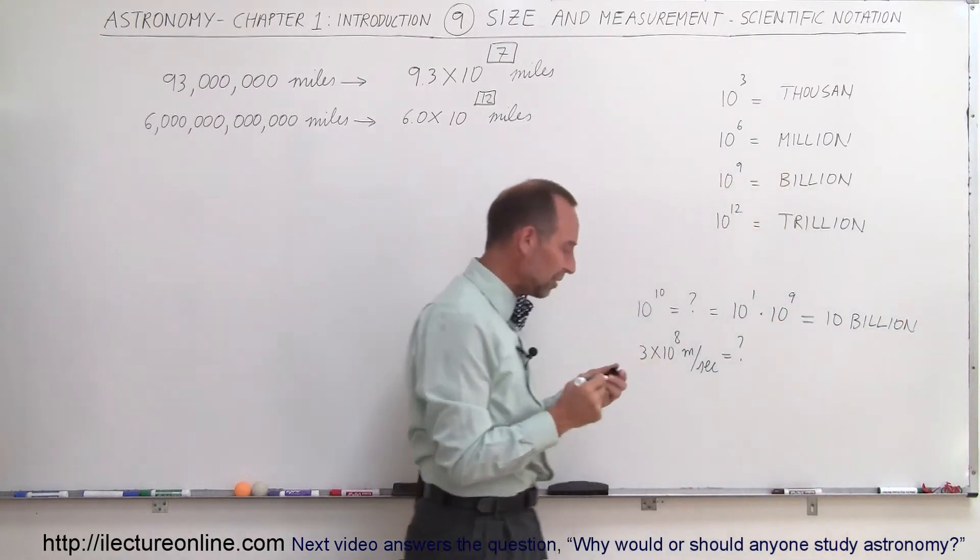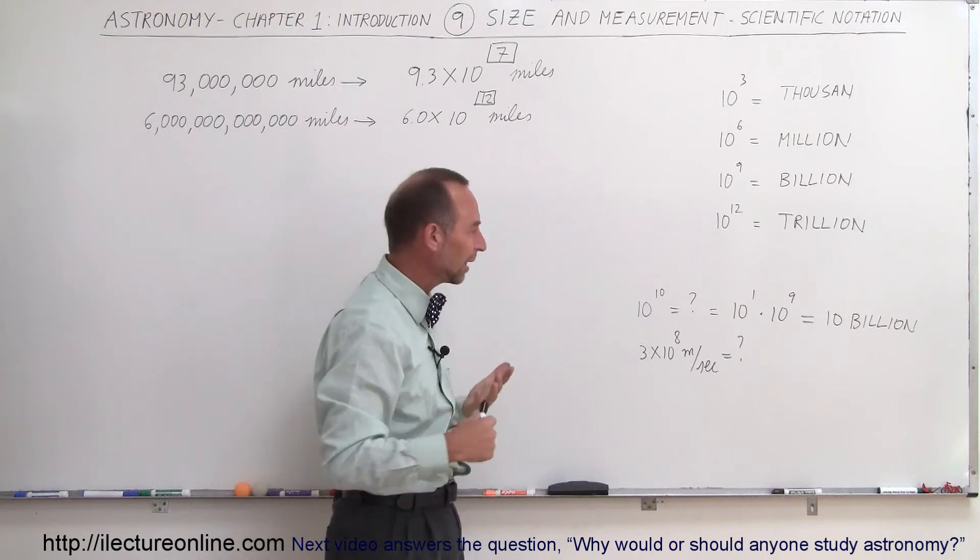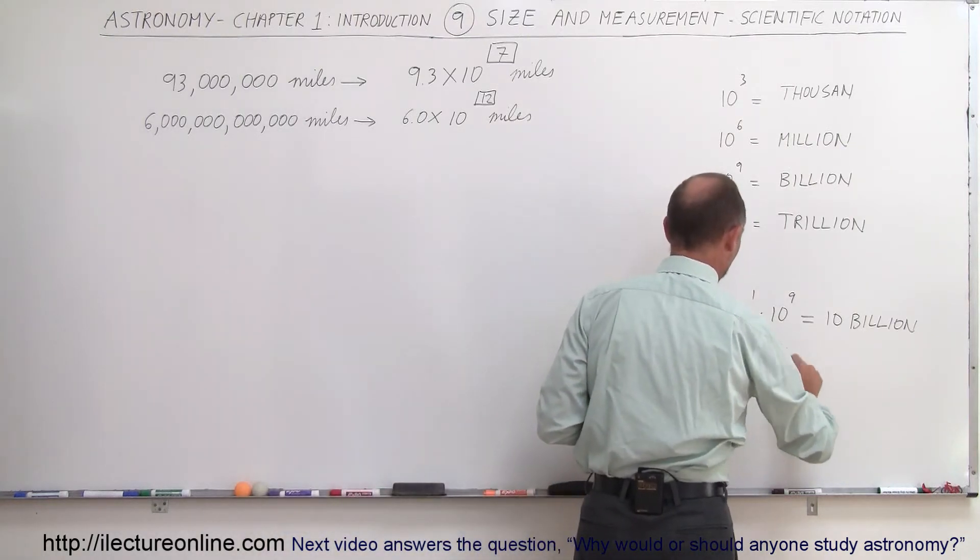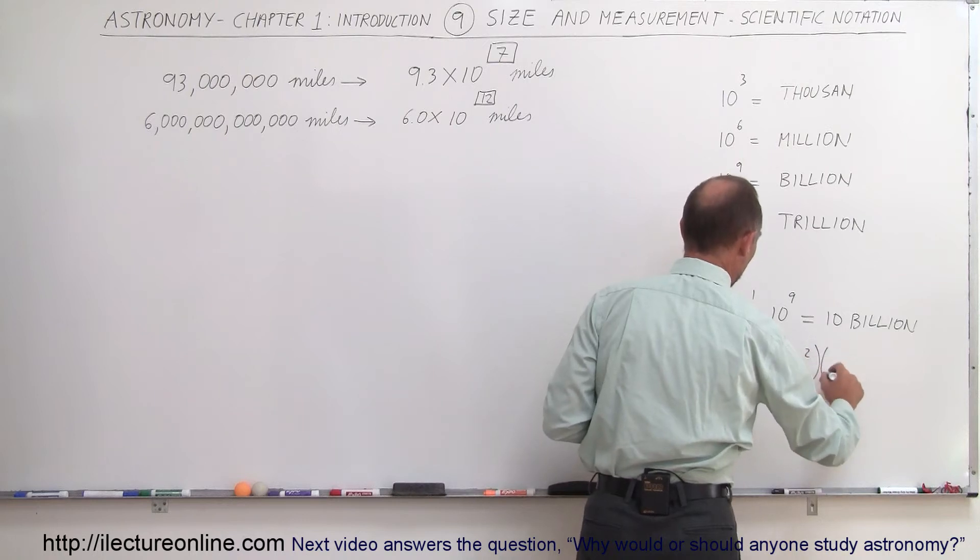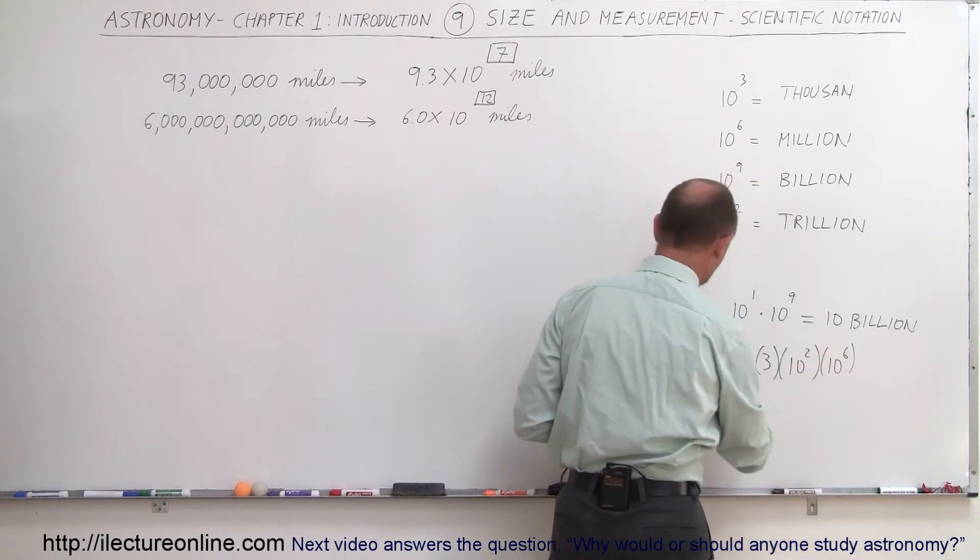And what about the speed of light in terms of meters per second? It's 3 times 10 to the 8th meters per second. Well, how do we think about that number? Well, think about it this way. This is equal to 3 multiplied times 10 to the 2nd, multiplied times 10 to the 6th. Again, when I add the two exponents, 2 plus 6 gives me 8 again.